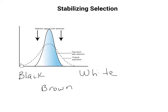Notice this is the normal population with the normal bell curve shape that includes all of the variations you'd see in that population. But in stabilizing selection, nature selects against those two extremes and favors the middle trait — in this example, our brown bunny.